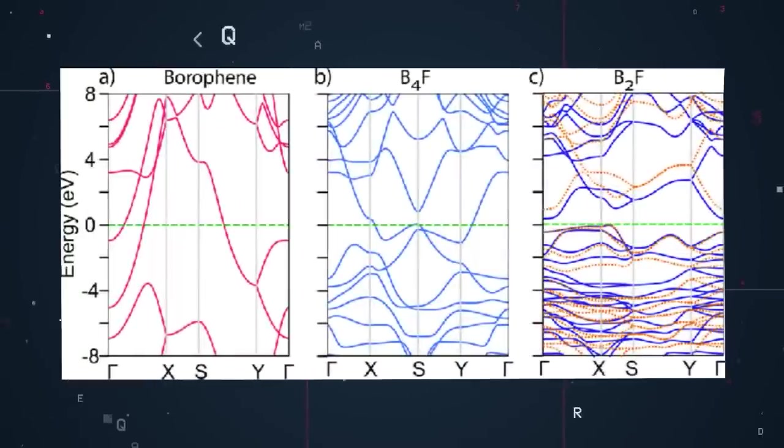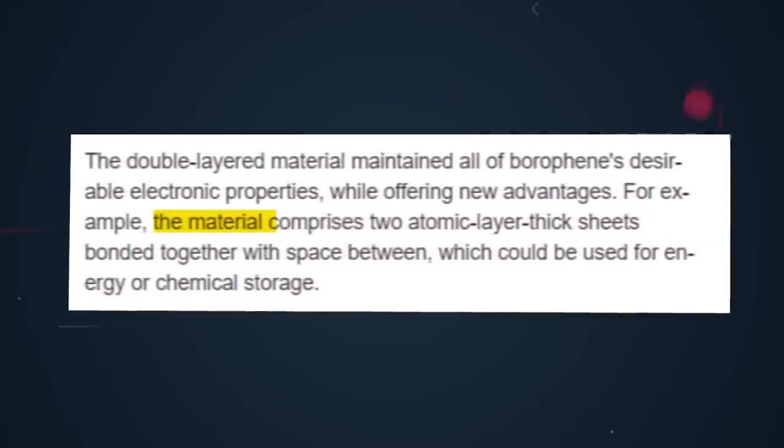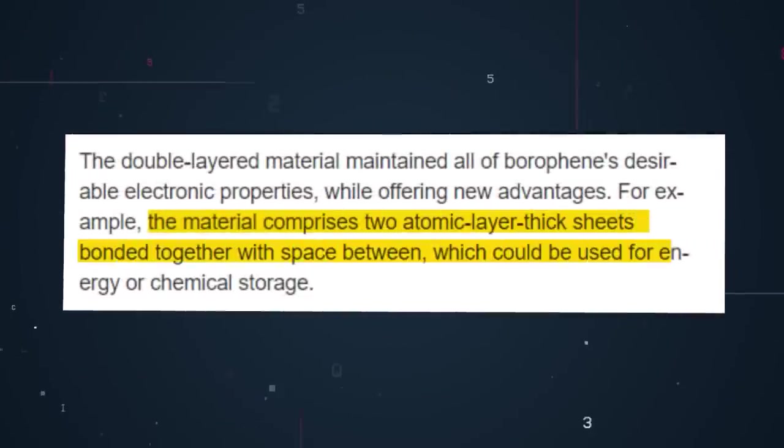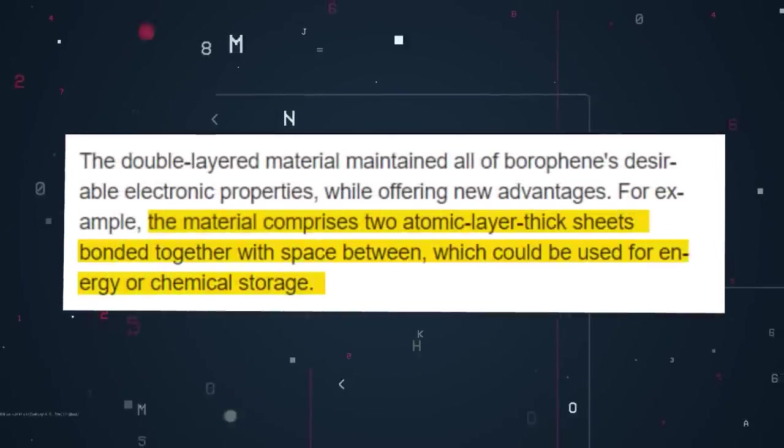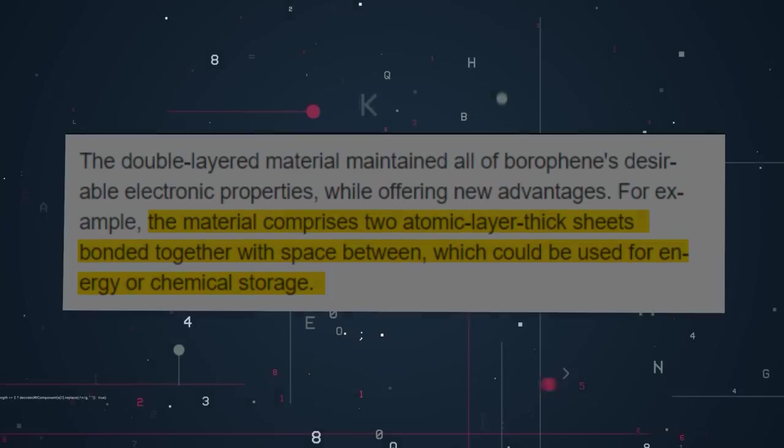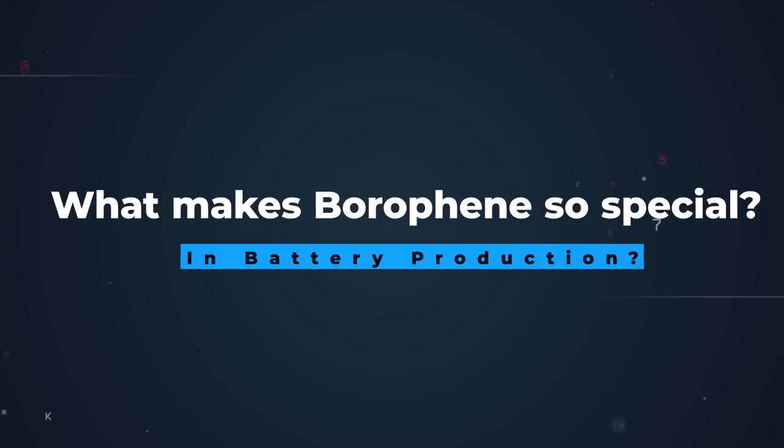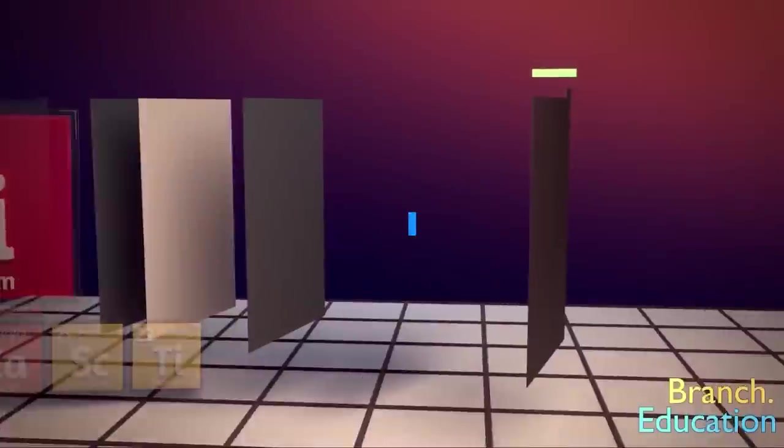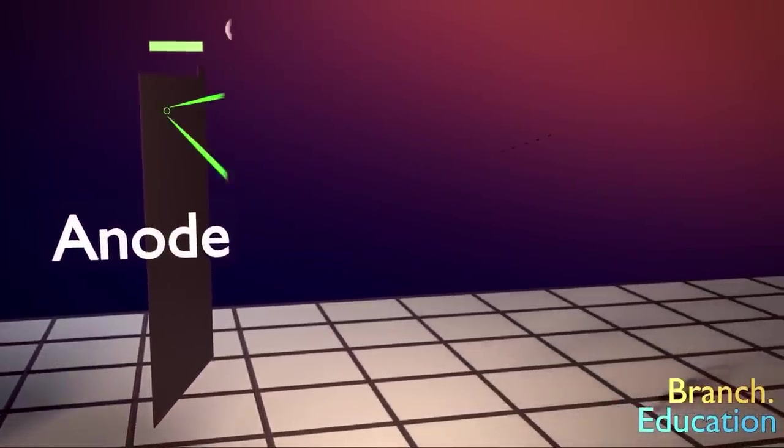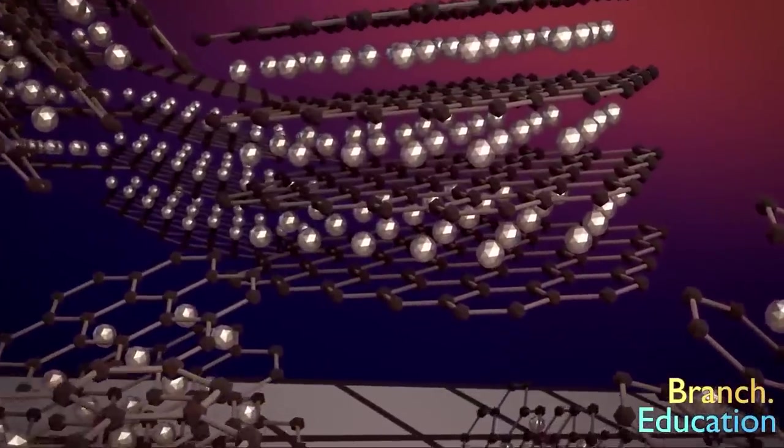The double layered material created by the team maintained all of borophene's desirable electronic properties while offering new advantages. For example, the material comprises two atomic layer thick sheets bonded together with space between, which could be used for energy or chemical storage. Speaking of energy storage, what makes borophene so special in battery production? If you are familiar with batteries, you will realize that larger capacitance, good electrical conductivity, and ionic conductivity are the key to whether a material can be used as electrode material.